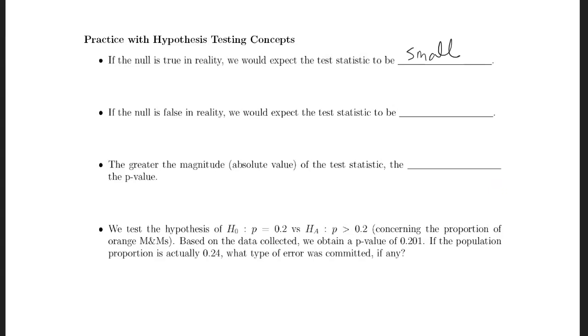If the null is false, in that case, we would expect the test statistic to be large. We would expect the test statistic to be surprising, which is something with a large z-score. The greater the magnitude, or the absolute value of the test statistic, the smaller the p-value in a two-sided test.